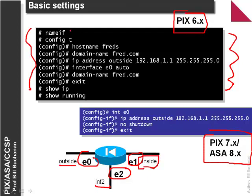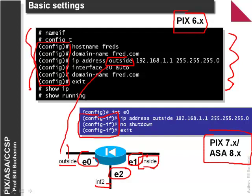PIX 6 is a fairly flat structure. Each interface has a name — inside, outside, and INF2 — which allows clear documentation for the interfaces. In PIX 6 most of the configuration was done within the config, whereas PIX 7 has a more hierarchical structure normal in Cisco IOS. In PIX 6, to set the IP address of the outside interface, we say 'IP address outside' and then give the IP address.